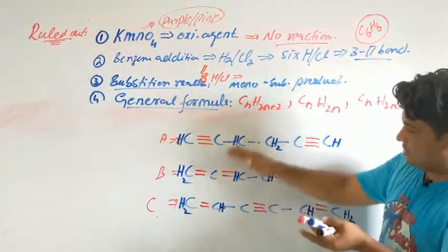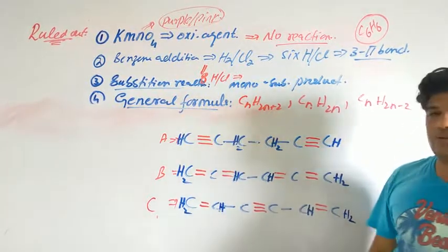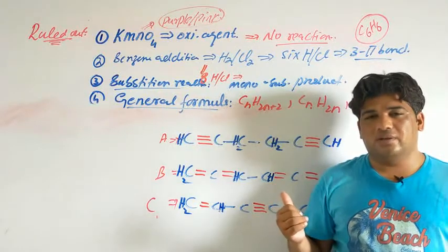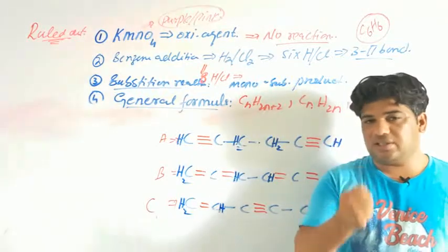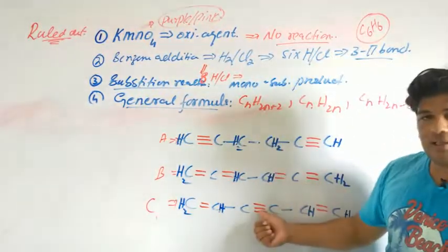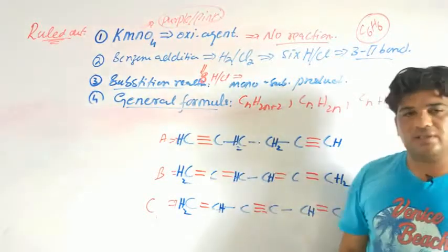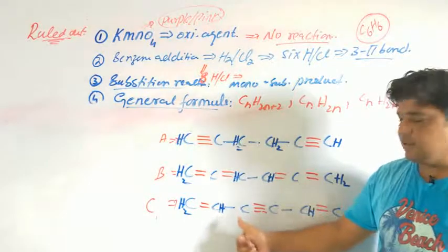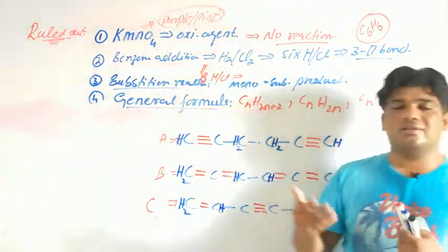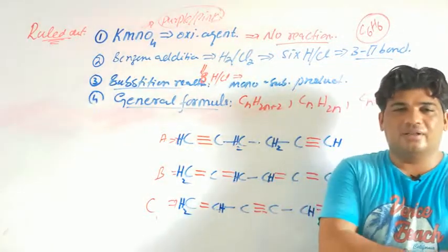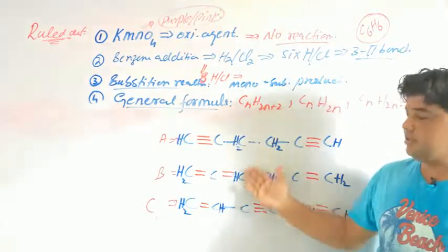If benzene were this open structure, then it would add 8 hydrogens or chlorines (showing 4 pi bonds), and KMnO4 would oxidize it and change color. But actual benzene shows no reaction with KMnO4. So this open structure cannot be benzene's structure.